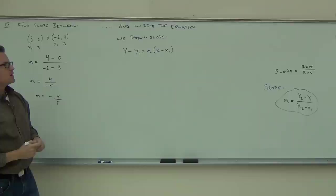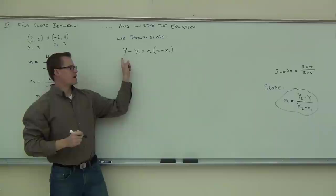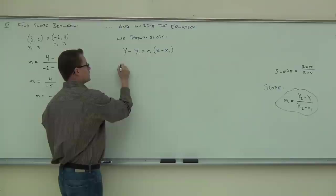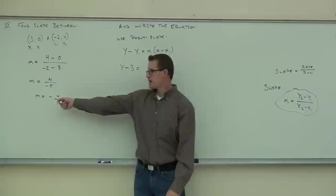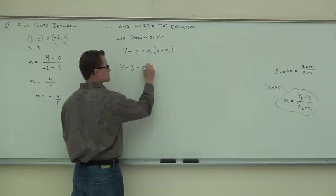Let's substitute in some points. Do I substitute anything in for this y? No — that's my variable, it stays no matter what. The minus stays. What's my y1? Zero. Equals m — what's my m? Negative four-fifths. Yes, I just found that. So negative four-fifths. We've got our x — we're not going to plug anything in for that x, that's our variable. We have our minus. And what are we going to put for x1? Three.